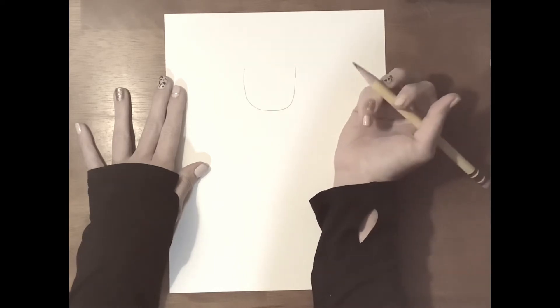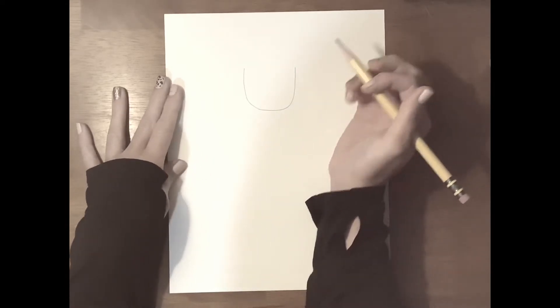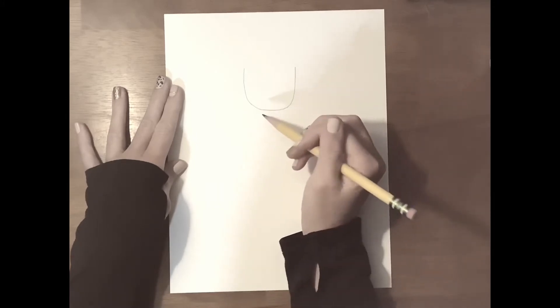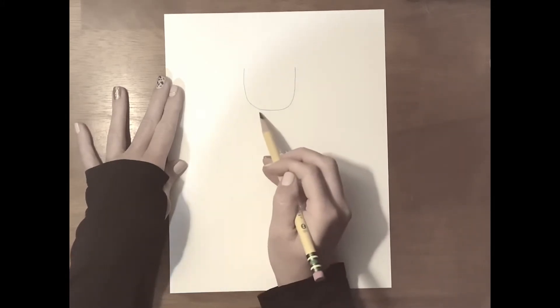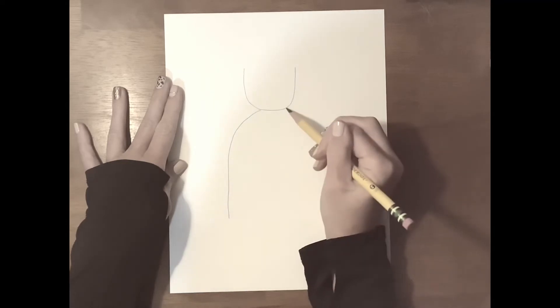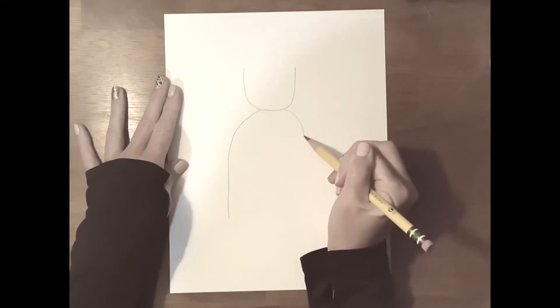Now we are going to draw, before we start with her face, her body. So you come to the edge of her chin and draw a curvy line down, just like that. And you will do the same thing on the other side.